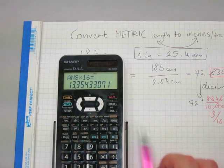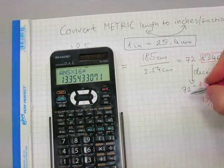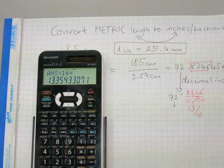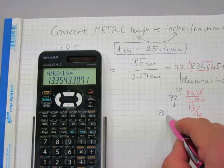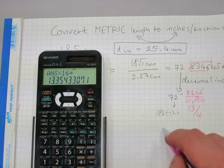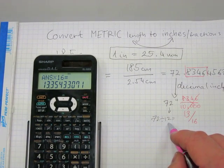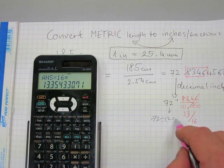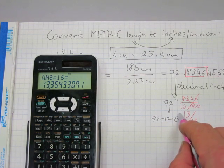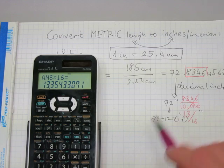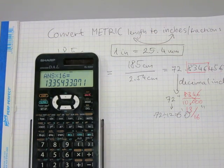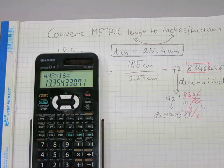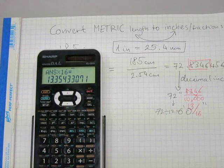And 72 inches is otherwise exactly 6 feet. How do we make feet out of it? 72 must be divided by 12 because there's 12 inches in a foot. And that's going to give you 6 feet, 0 inches, and 13 16th of an inch. So if somebody has a height of 185 centimeters, then it is 6 feet, 0 inches, and 13 16th of an inch.